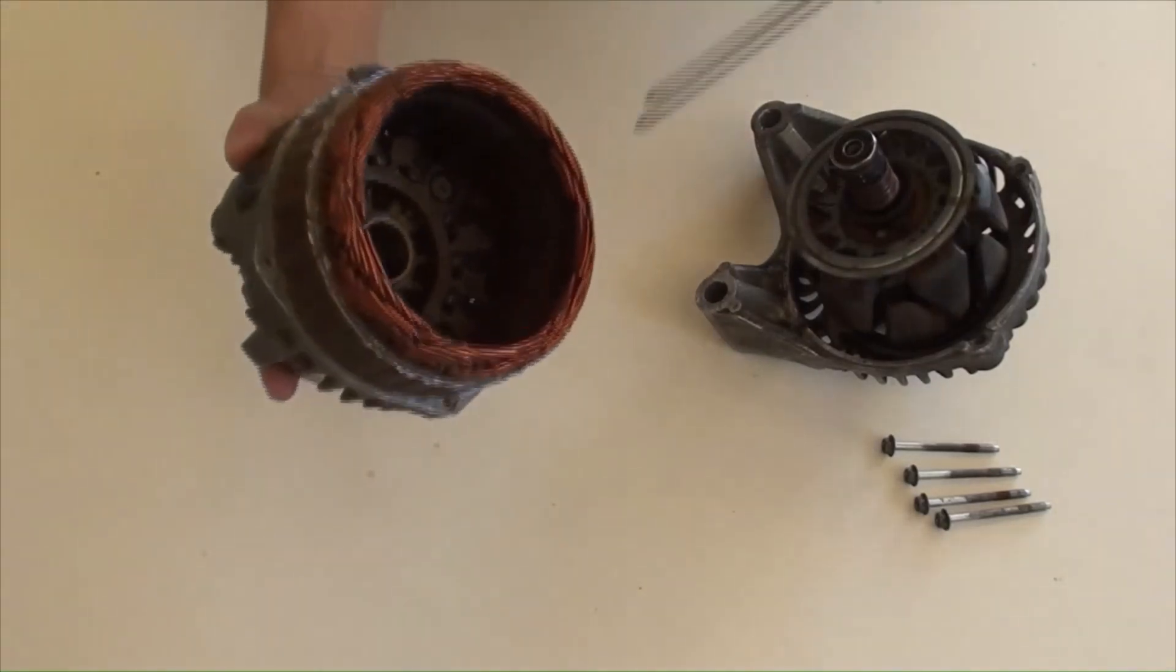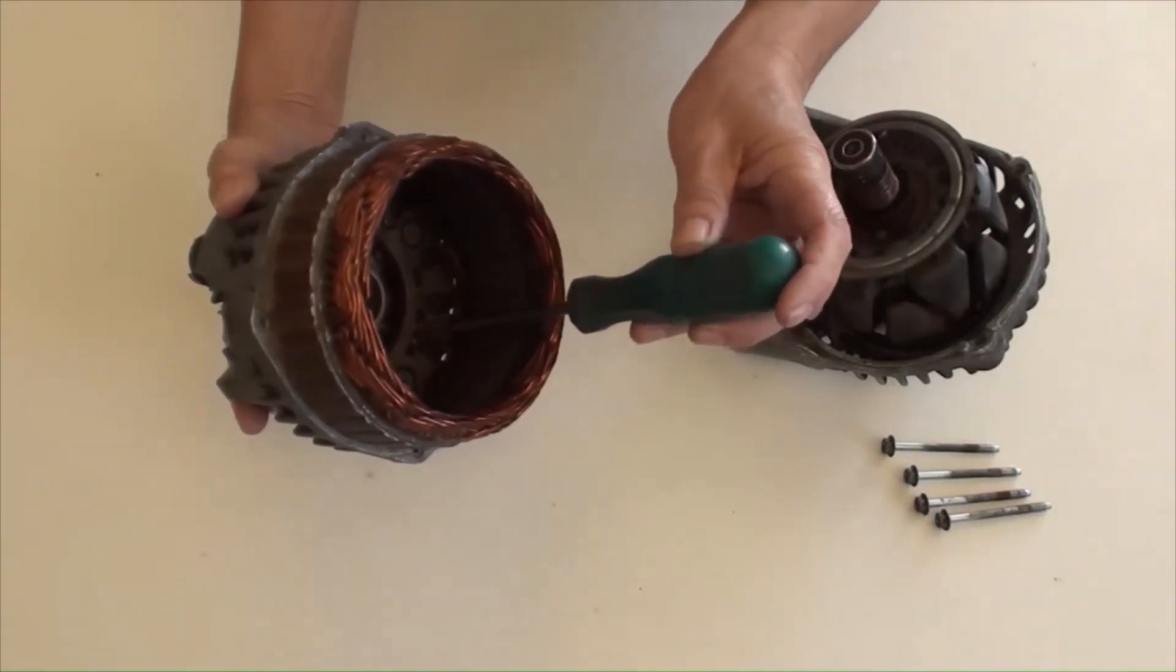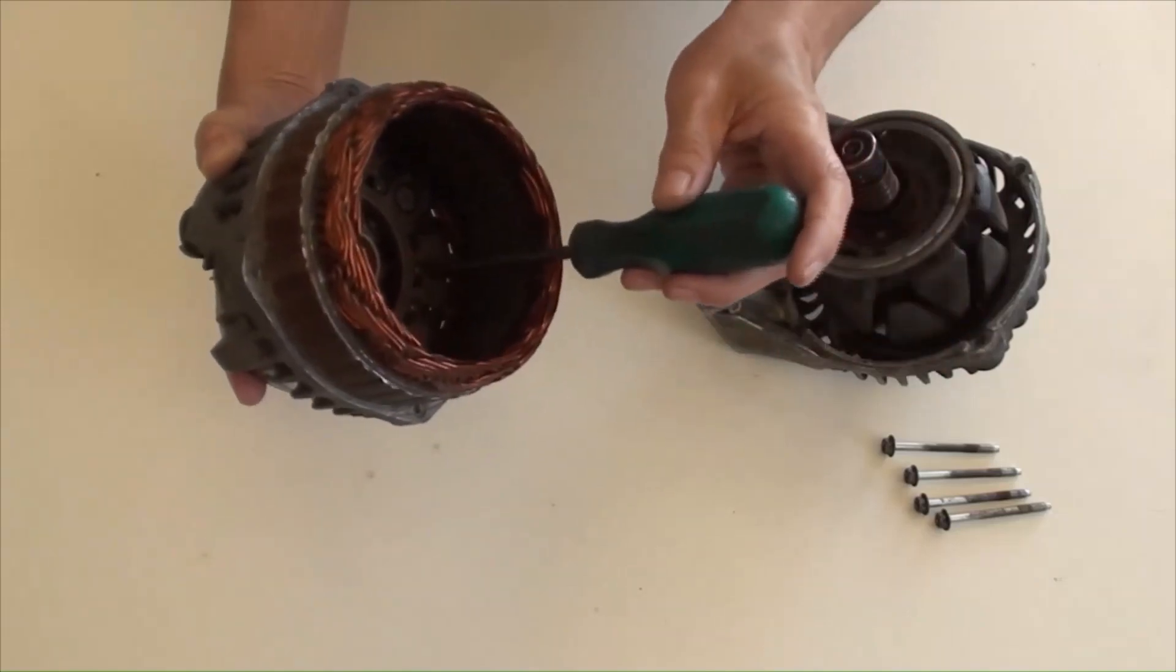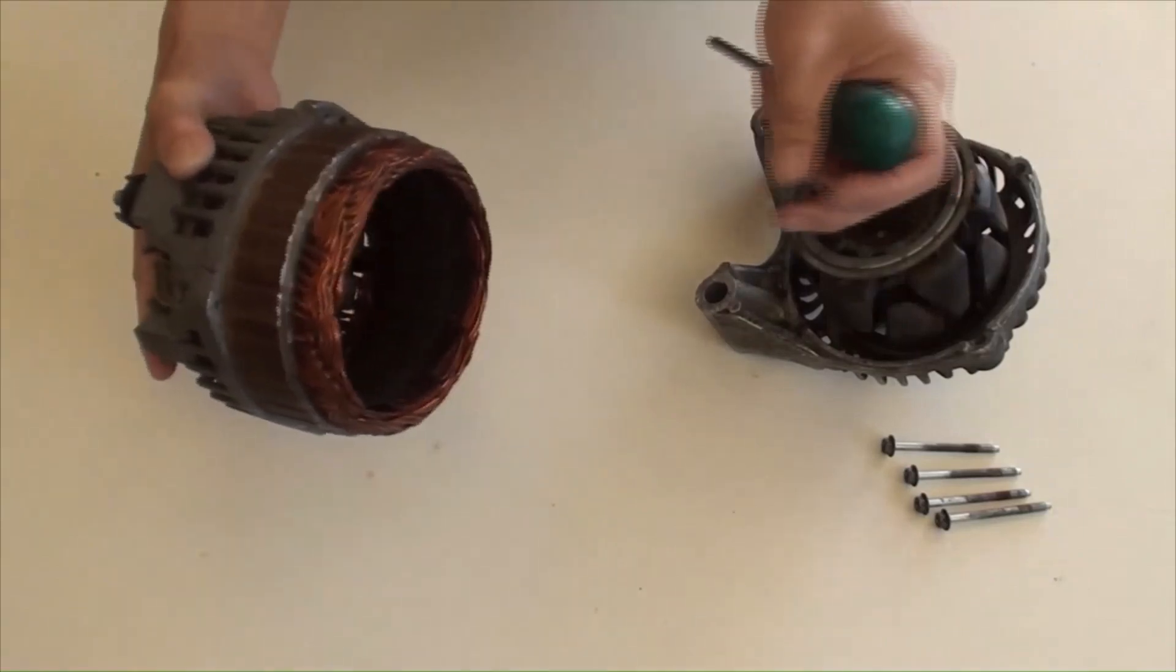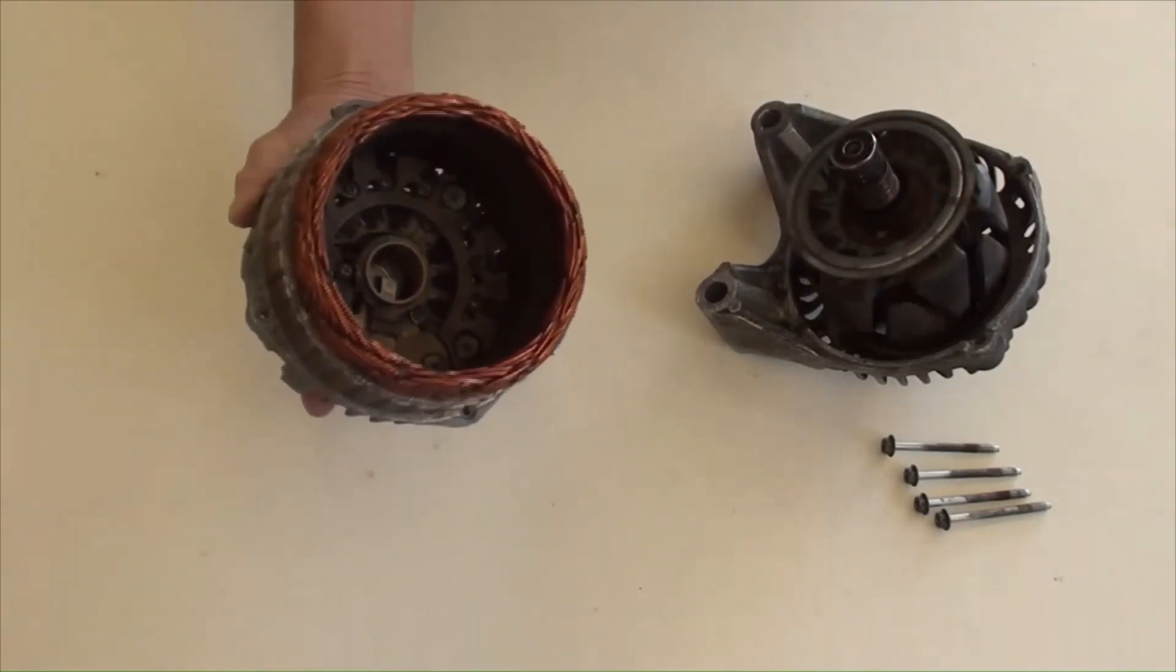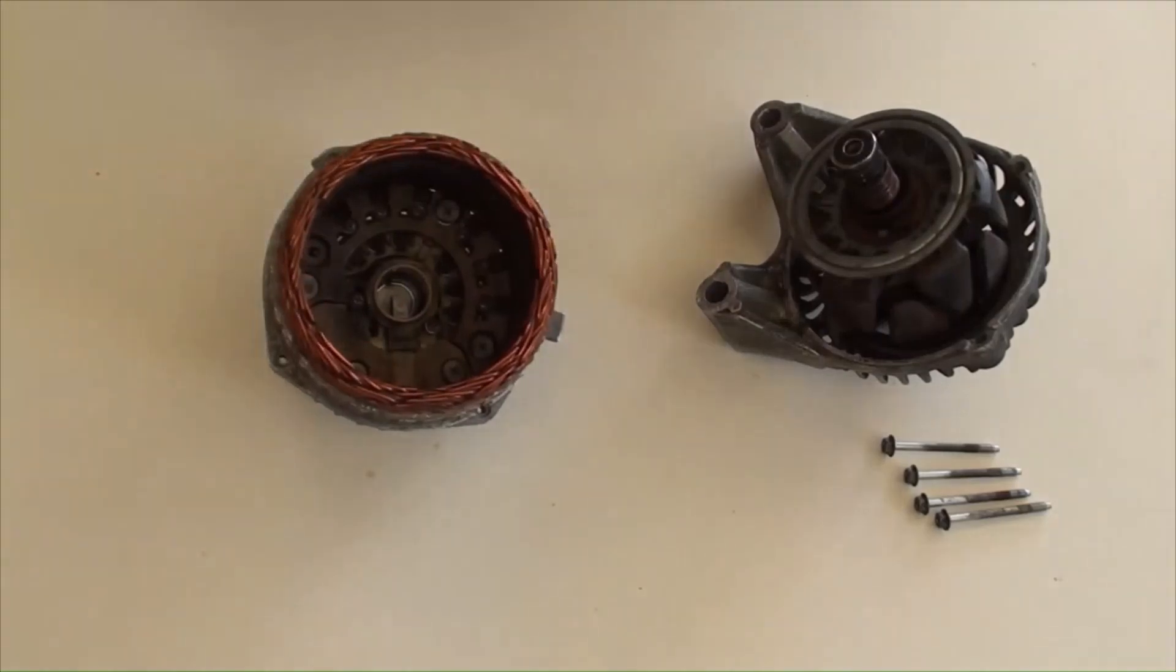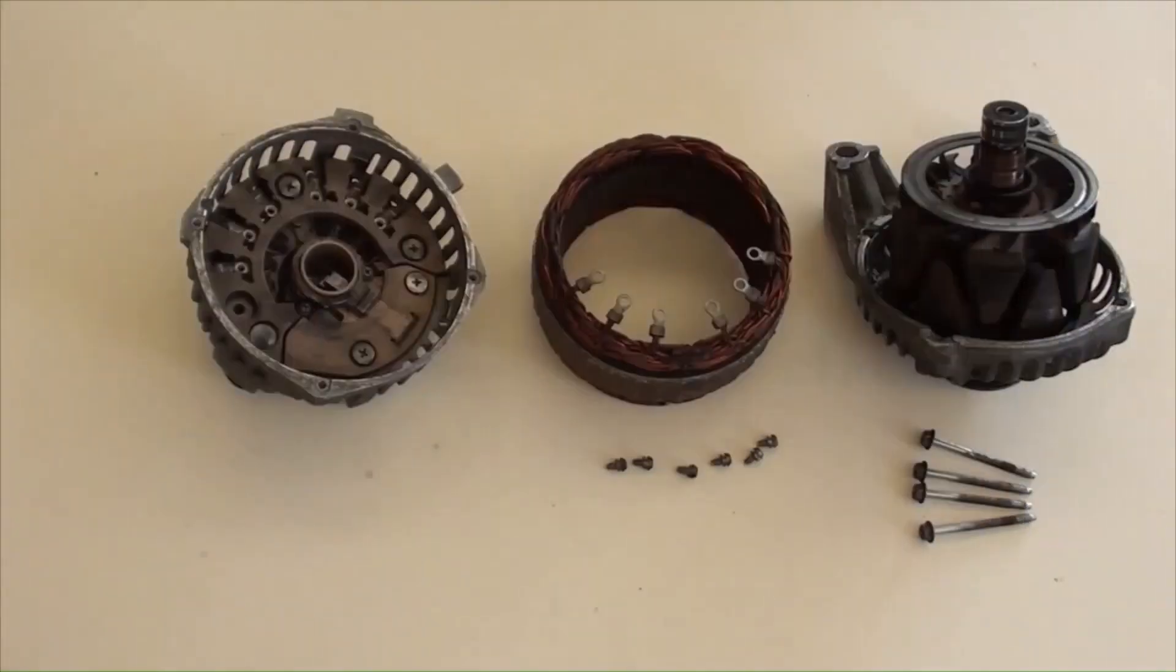Stator is secured by 6 screws inside, on diode's rectifier with the rest of components. Undo those screws. Then pull stator with its coil out from main body. As shown here.